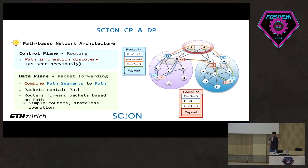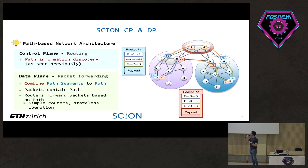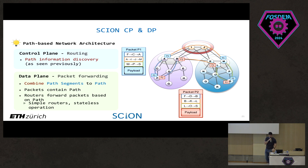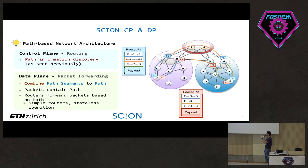In the data plane, end hosts retrieve path segments from the local service and combine them to create a full path. Segments are combined into one path for packet one and a different path for packet two. Once the end host has encapsulated this path information into the packet, it sends it out. Routers forward packets based on the path information, simply inspecting the next hop. This allows for simple, stateless router operations.